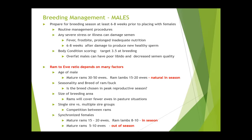Ram to ewe ratios — we also need to consider this. Ram lambs cannot have the same expectations put on them as mature rams. In an unsynchronized natural breeding in season, a mature ram with good testicle size and semen quality should be able to breed 30 to 50 ewes in a 35-day two-cycle window — that should not be a challenge. Ram lambs, we generally recommend 15 to 20, and pay attention when you first put them out because sometimes it takes them a while to figure out which end they're supposed to be breeding. They're usually smarter than yearling bulls, but make sure they're actually performing the task.